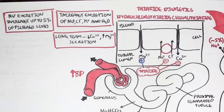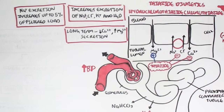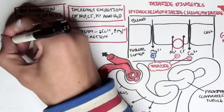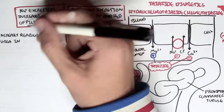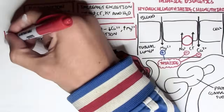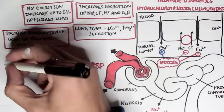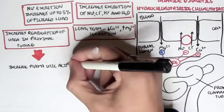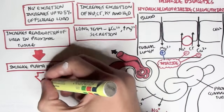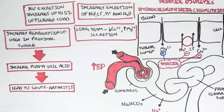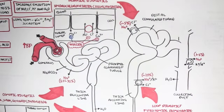Very interestingly, thiazide diuretics increase the reabsorption — not the excretion — of urea in the proximal convoluted tubules. If we increase the reabsorption of urea, this will increase plasma uric acid levels. Increased plasma uric acid levels may lead to gout, or gouty arthritis, where uric acid accumulates within the joints and causes pain.